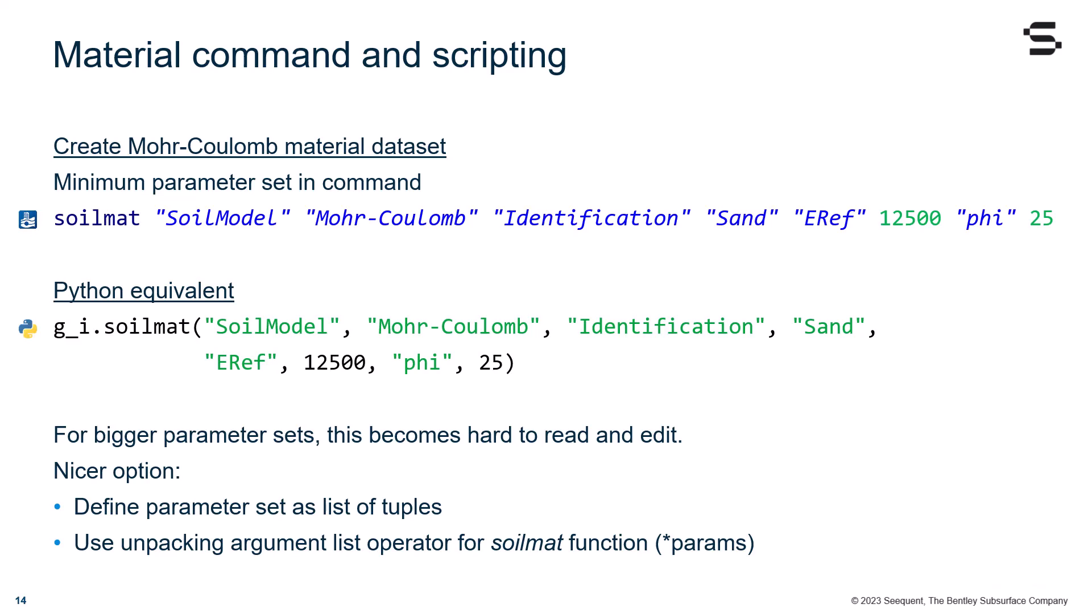Let's check now an example of creating a Mohr-Coulomb material dataset. The first line is the command using the minimum set of properties. Below, you can see the Python equivalent.